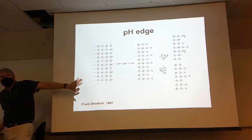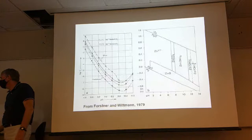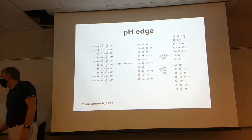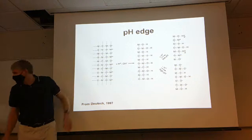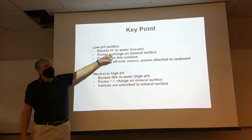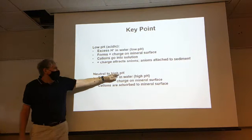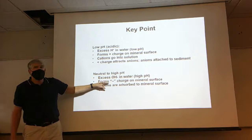The key points: under low pH we have excess hydronium in the water, it forms a positive charge on the mineral surface, cations go into solution, and anions are attracted. When we have high pH we have excess hydroxide — those go into the water, form a negative charge, and we attract cations. So it's going to be dependent on whether we're above or below the zero point of charge for that mineral.